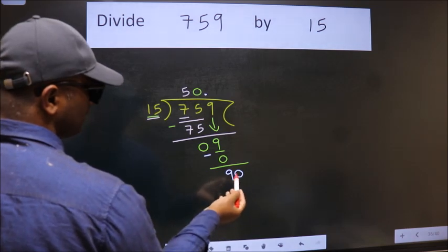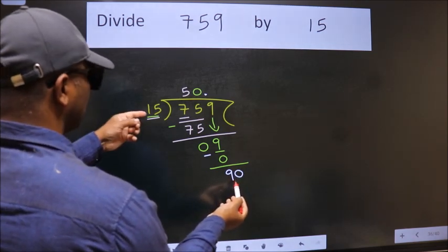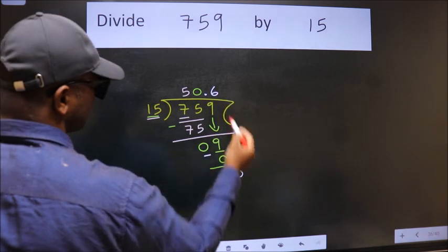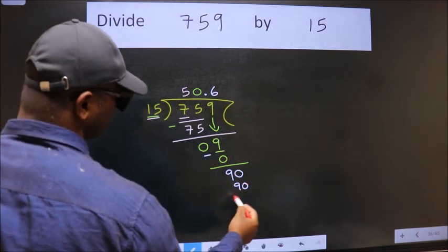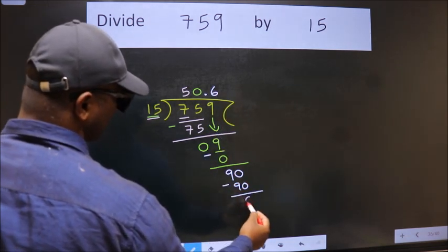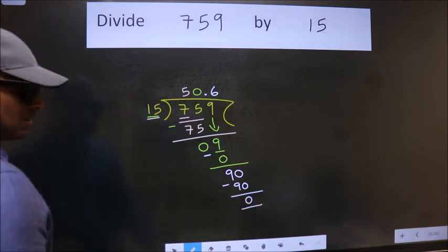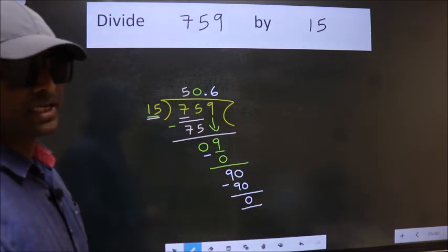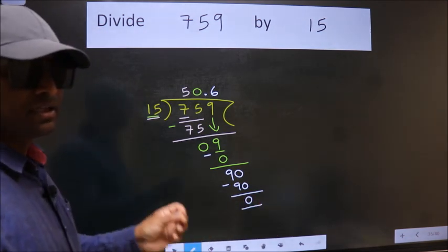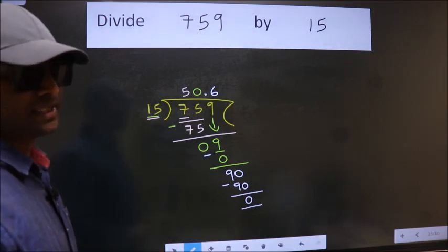And 9 smaller than 15, so now we can put dot and take 0. So 90. When do we get 90 in 15 table? 15, 6, 90. Now we subtract, we get 0. Did you understand where the mistake happens? You should not do that mistake. An important mistake.